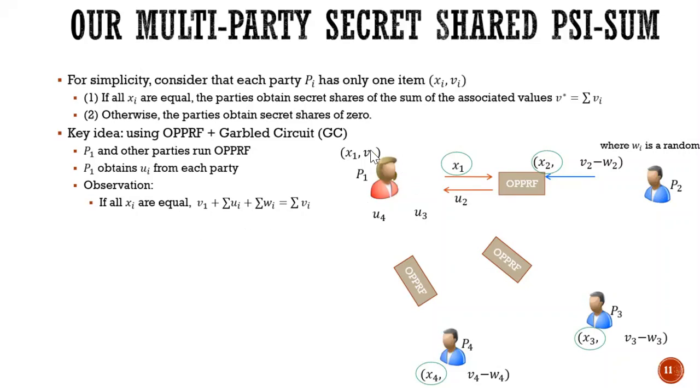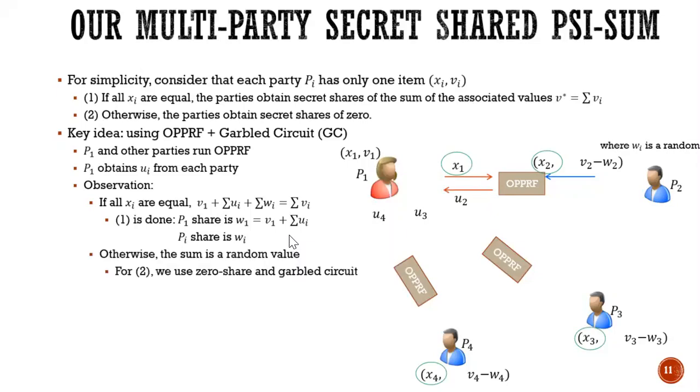So we have the very nice observation is that if all XIs are equal, then we have V1 plus with all the UIs equal to the sum VI star. So therefore, for number one, P1 share is W1 equals the first two terms, V1 plus all the UIs.